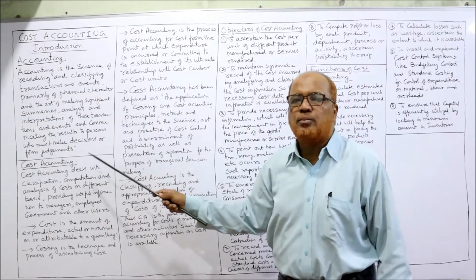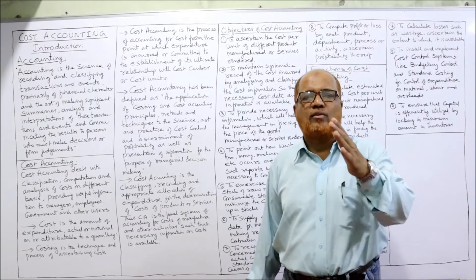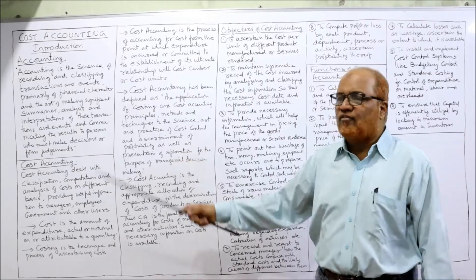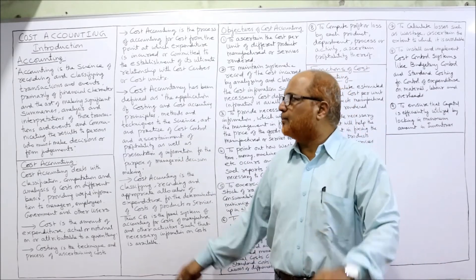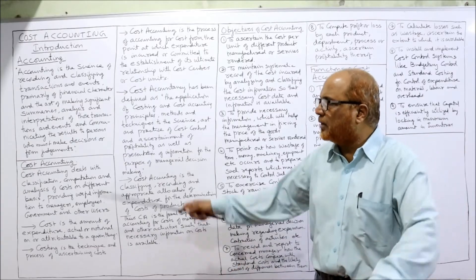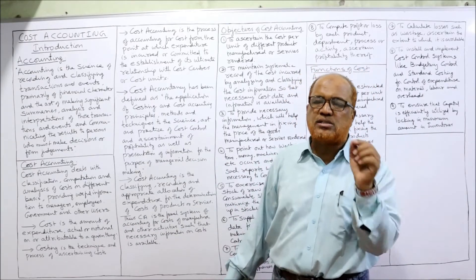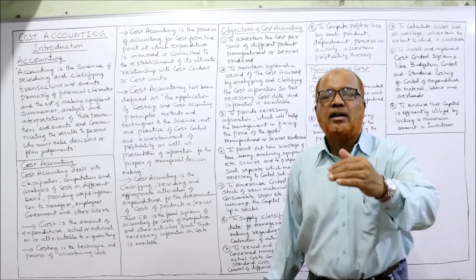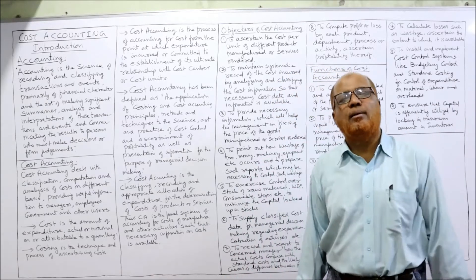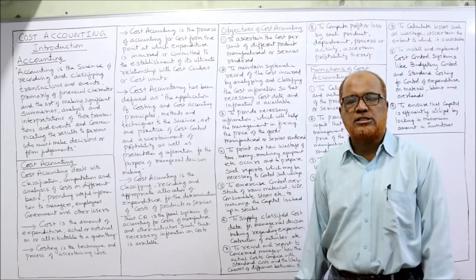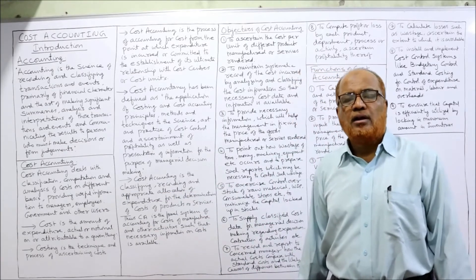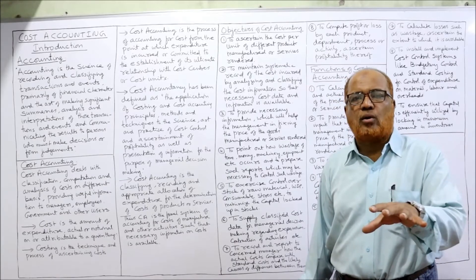So this is the complete meaning of the term accounting: it is the art of recording and classifying transactions and events of primarily financial character, and the art of making summaries, analysis, and interpretation of those transactions and events, and communicating this information to concerned parties so they can take decisions and form judgments. Now we will focus on cost accounting.